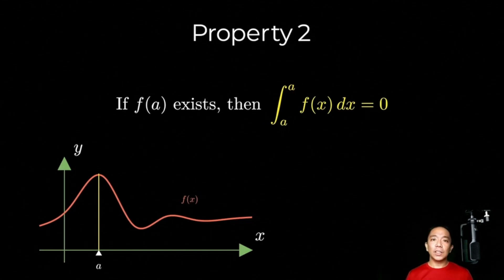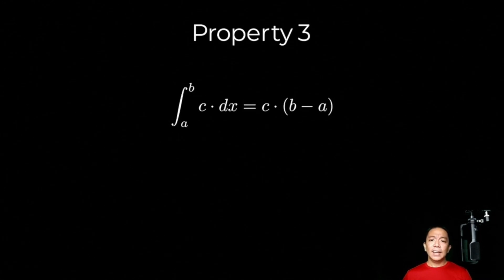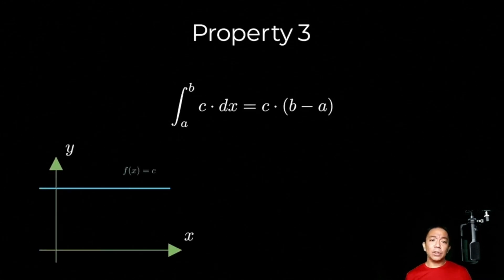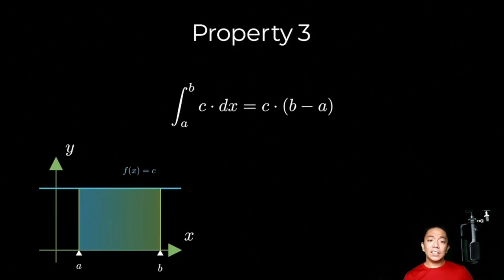Let's move on to the third property. The third property states that the definite integral from a to b of a constant c is equal to c times b minus a. Ano ba yung function na y equals c or f of x equals c? That's just a horizontal line. And if we want to find the definite integral of that function from a to b, then it's just this shaded region — it's just a rectangle, na ang height niya ay c, at ang base niya ay b minus a.